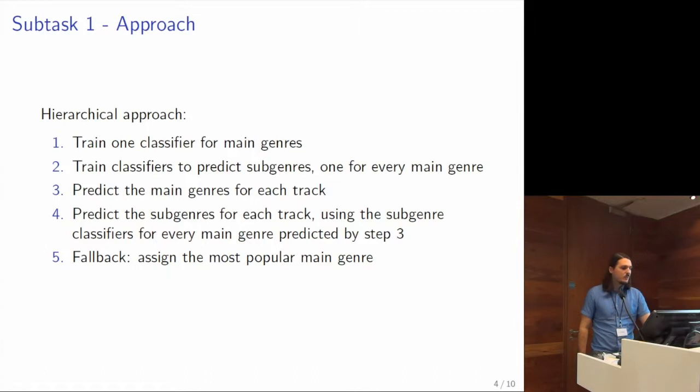For subtask one, our approach was to exploit the hierarchical nature of the genre taxonomies we got. We had a natural hierarchy in genres and sub-genres, so we decided to train a hierarchical set of classifiers. We trained one classifier that predicted main genres, and then for every main genre we trained a further classifier to predict its sub-genres. To do prediction, we first ran the main genre classifier, then ran all sub-genre classifiers for the main genres that were identified in the step before.